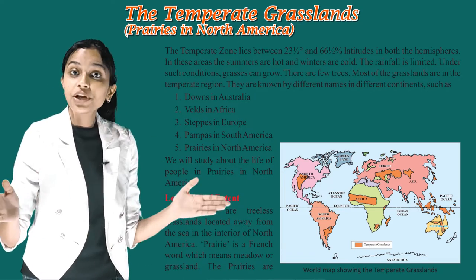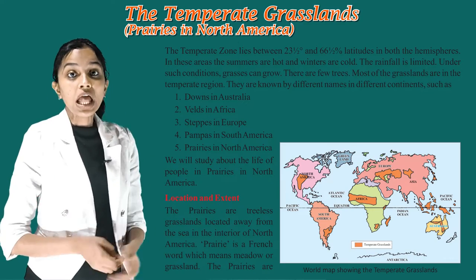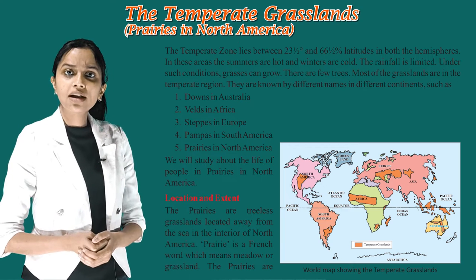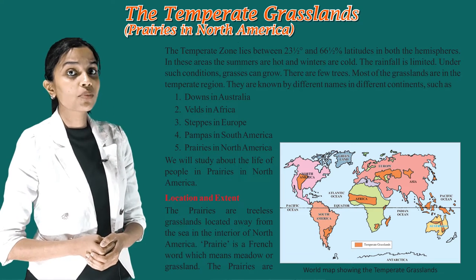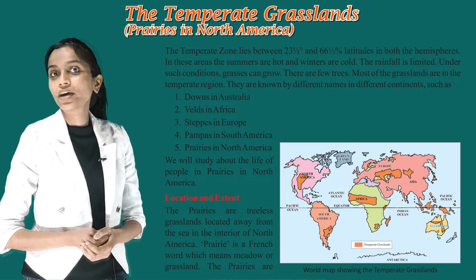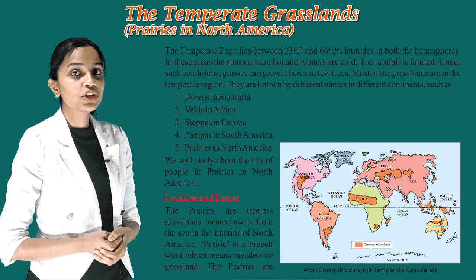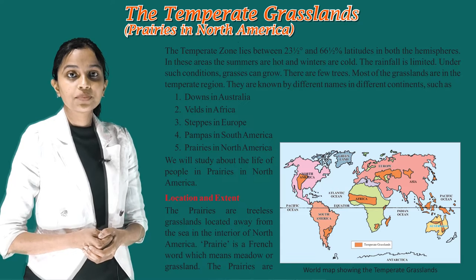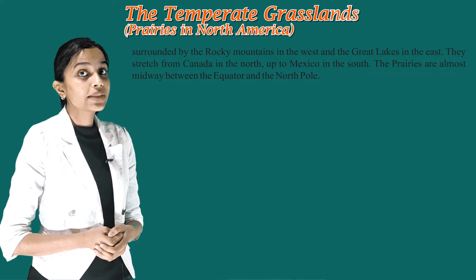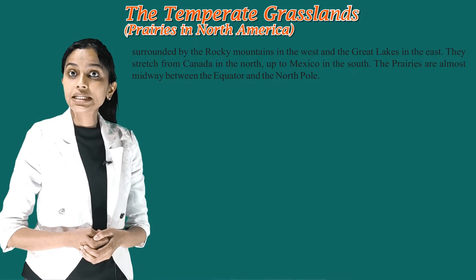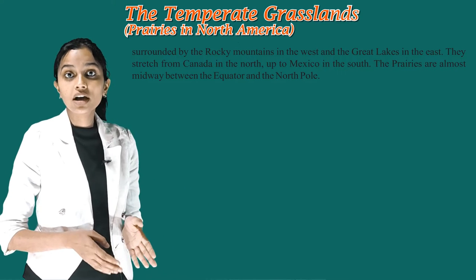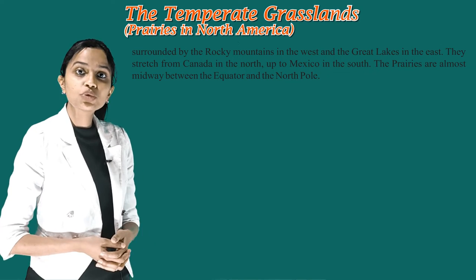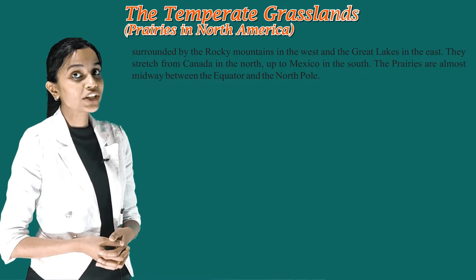The prairies are treeless grasslands located away from the sea, in the interior of North America. 'Prairie' is a French word which means meadow or grassland. The prairies are surrounded by the Rocky Mountains in the west and the Great Lakes in the east. They stretch from Canada in the north up to Mexico in the south, almost midway between the equator and the North Pole.